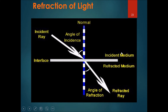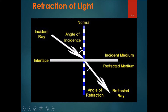Imagine two mediums — for example, air and water. When light passes from air and hits the water surface at an angle, you would think it would just continue straight through the water. However, it doesn't. It actually bends, and it bends towards the normal. You can see that the angle on the water side is slightly less than the angle on the air side.